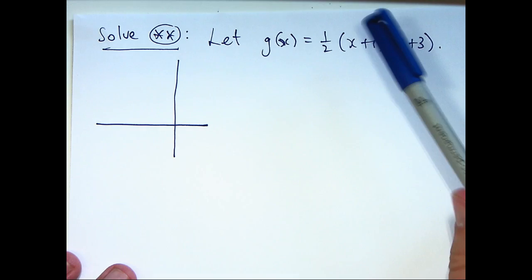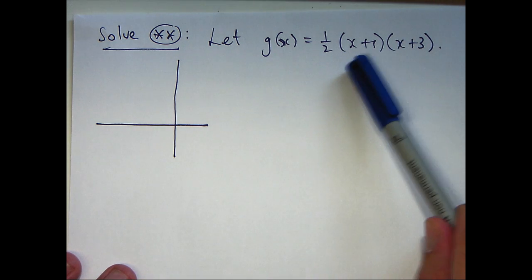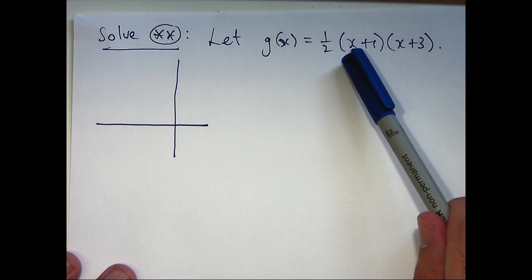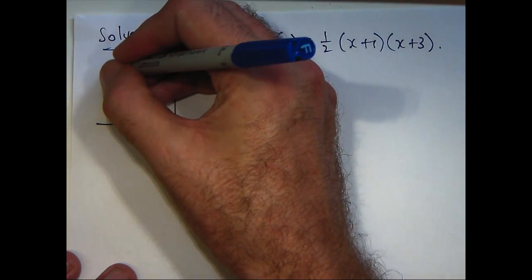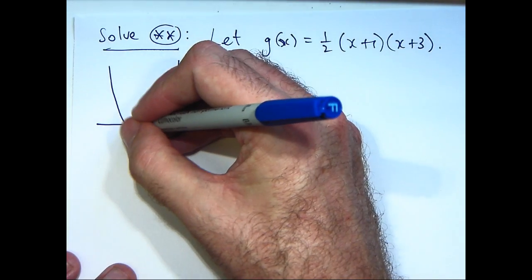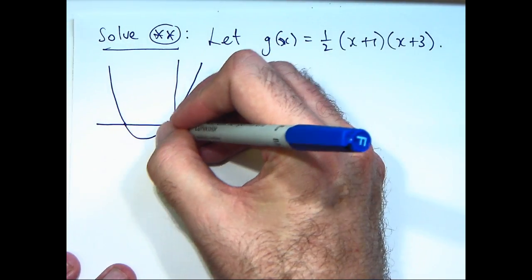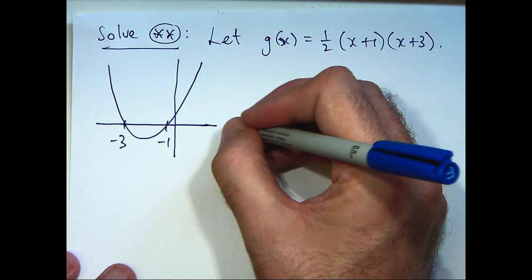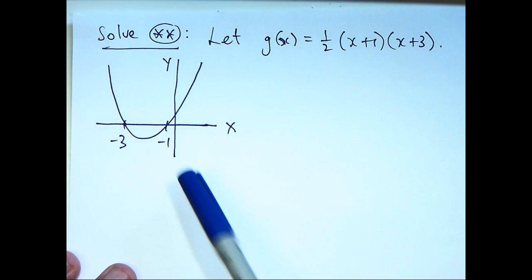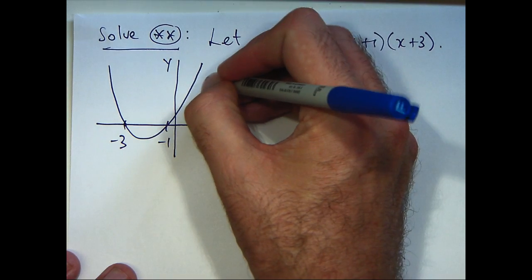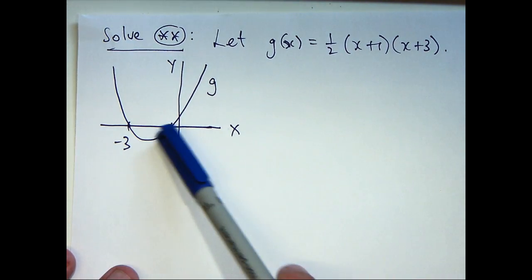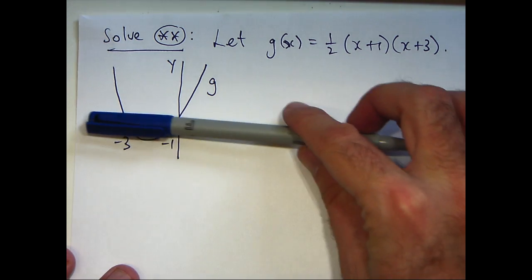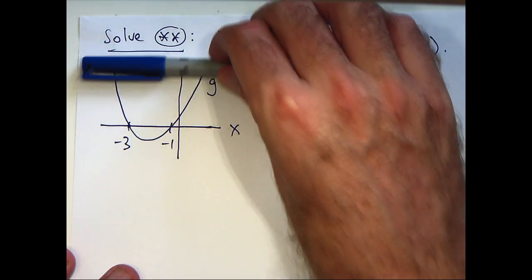Okay, we're going to have an x squared and the coefficient of that x squared is going to be positive. So we've got a u-shaped parabola that cuts the x axis at negative 1 and negative 3. So let's look at this and see,